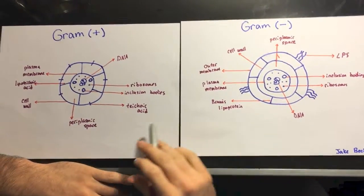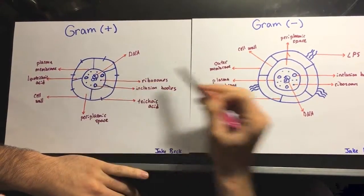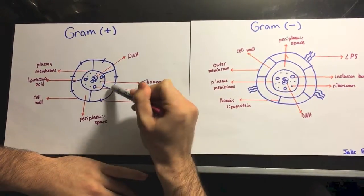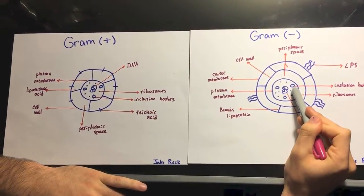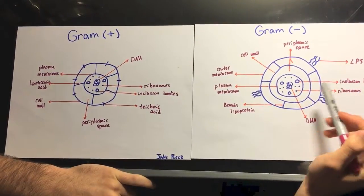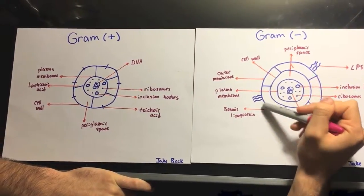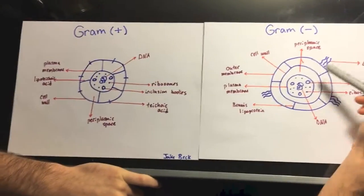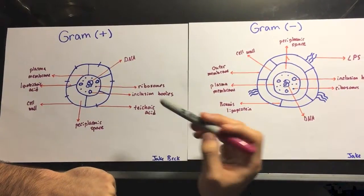So here's a side-by-side comparison of the two. As you can see, they both have plasma membranes and cell walls with DNA, ribosomes, and inclusion bodies within the plasma membrane. One of the big differences is that the gram-negative has an outer membrane with two periplasmic spaces, while the gram-positive only has one small periplasmic space.